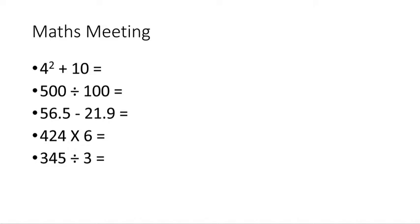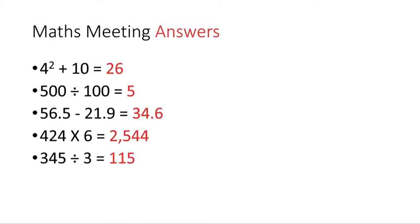Okay, let's look at the answers together in 3, 2, 1. Here we are. So 4 times 4 is 16, plus 10 is 26. Divided by 100 — you're sliding it down the place value chart twice, leaving you with 5. Column subtraction, multiplication and short division. Well done if you've got those correct — remember to take a picture and put them on ClassDojo.